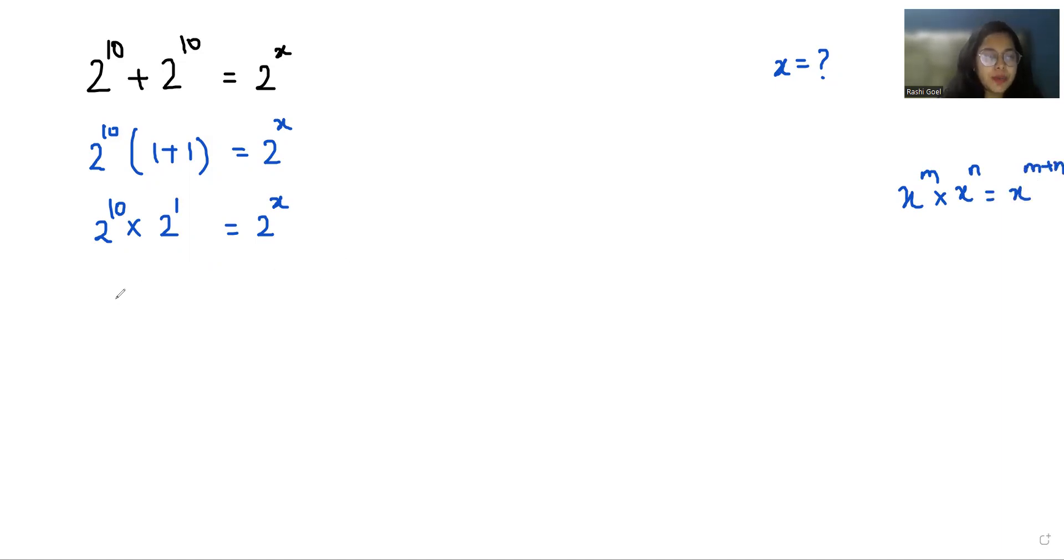So it becomes 2 power 10 plus 1 which equals 2 power x. So 2 power 11 equals 2 power x. If we compare both sides, the value of x is 11.